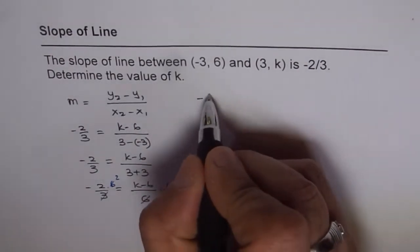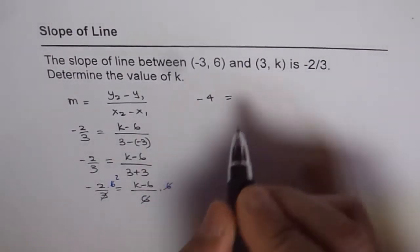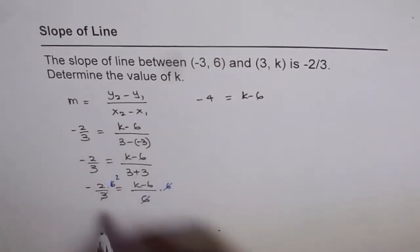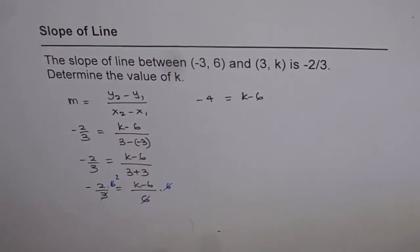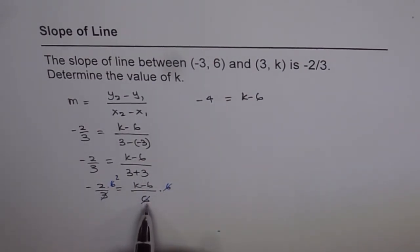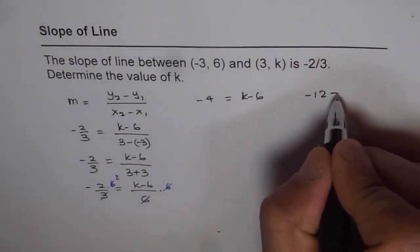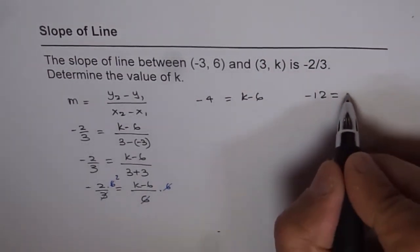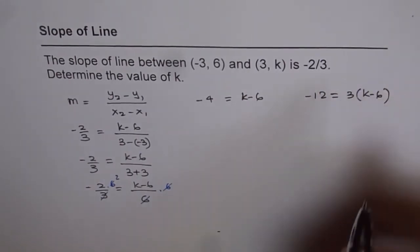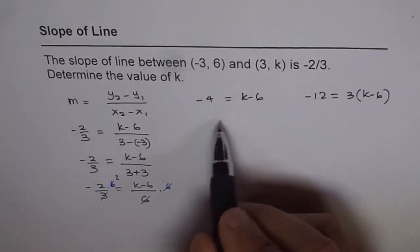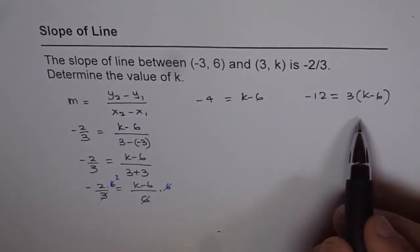So we get -4 equals k minus 6 in this case. Otherwise, if you cross multiply, then what do you get? If you cross multiply, that means 6 times -2 will give you -12 equals 3 times (k minus 6). You get this. Solving both equations is one and the same thing.